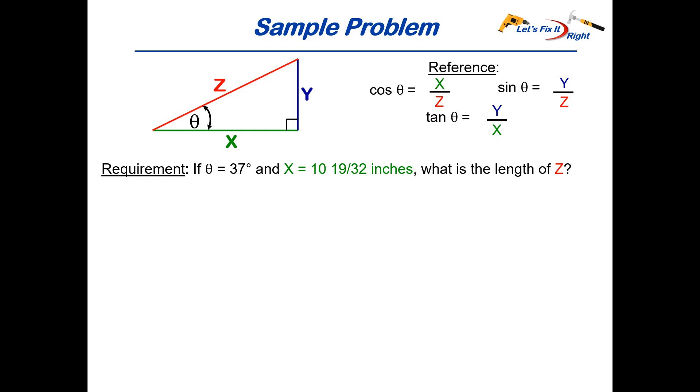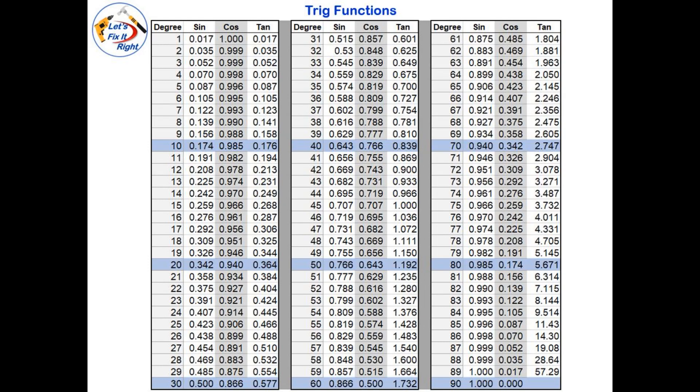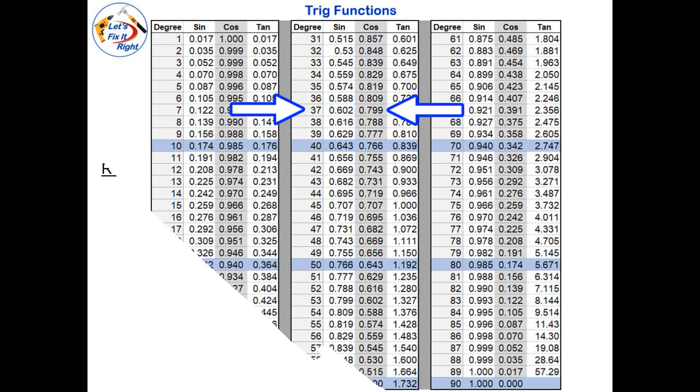We'll continue by substituting 10 and 19/32 of an inch for X. Next we'll look up the cosine of 37 degrees in our let's fix it right trig table and determine it equals 0.799 and then enter this value into our equation.